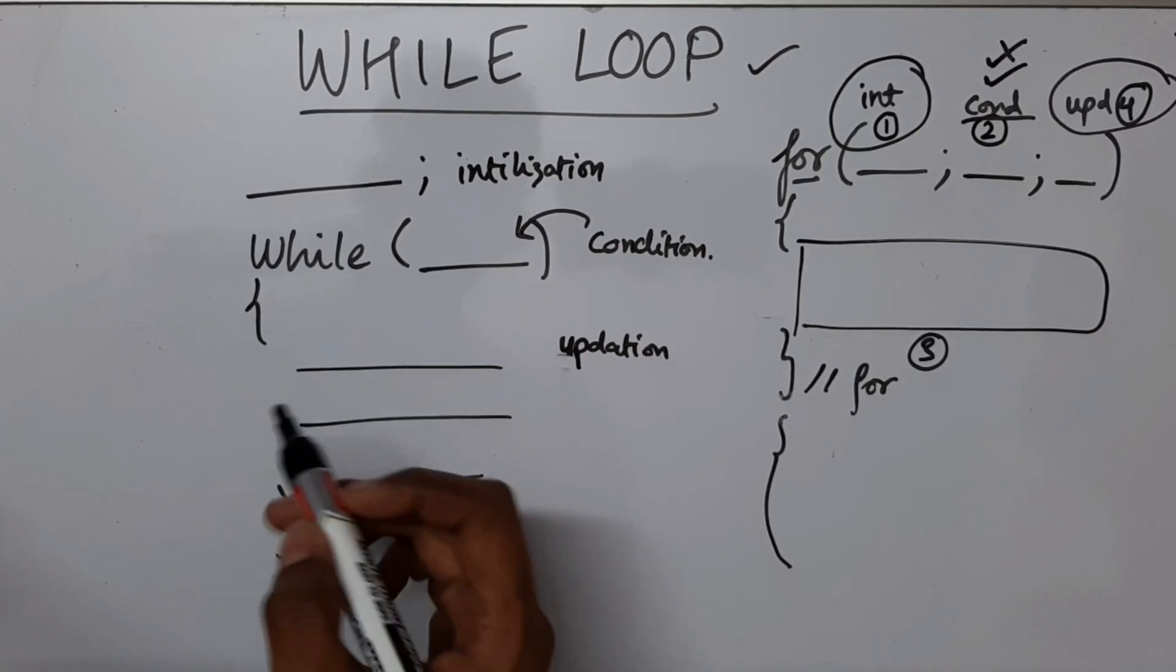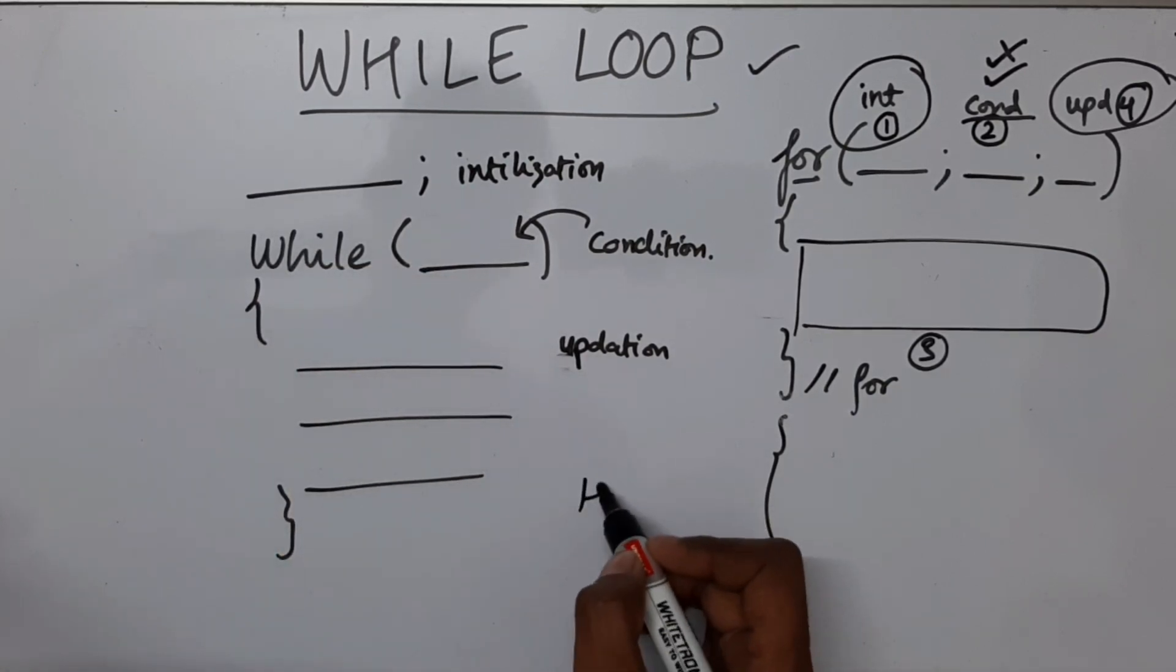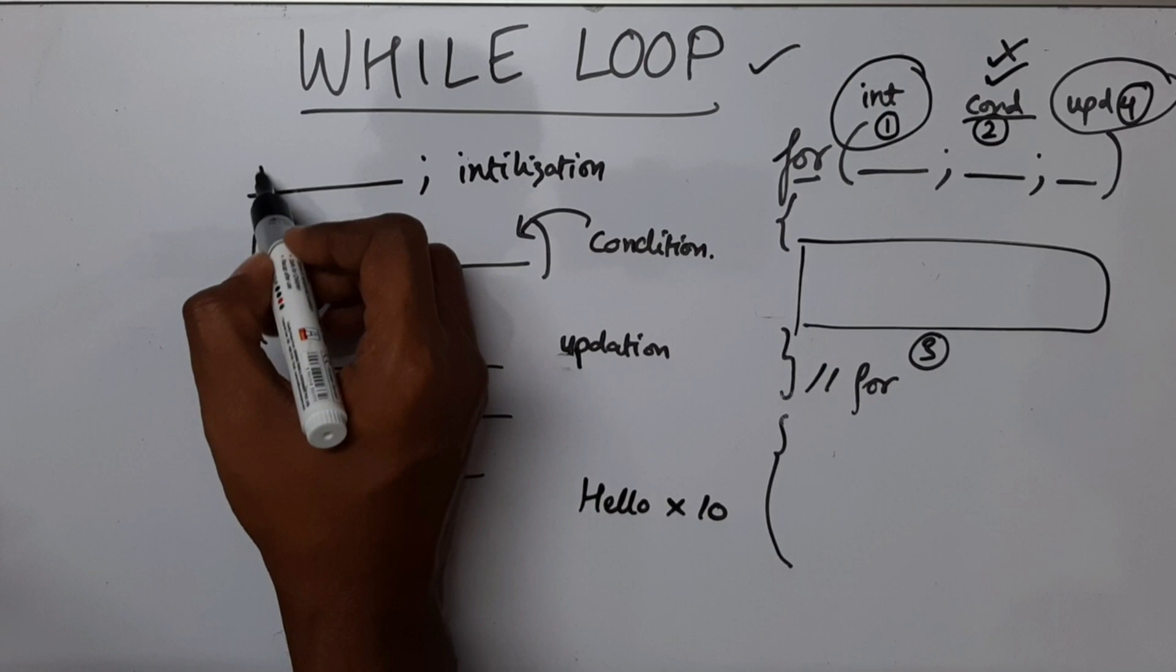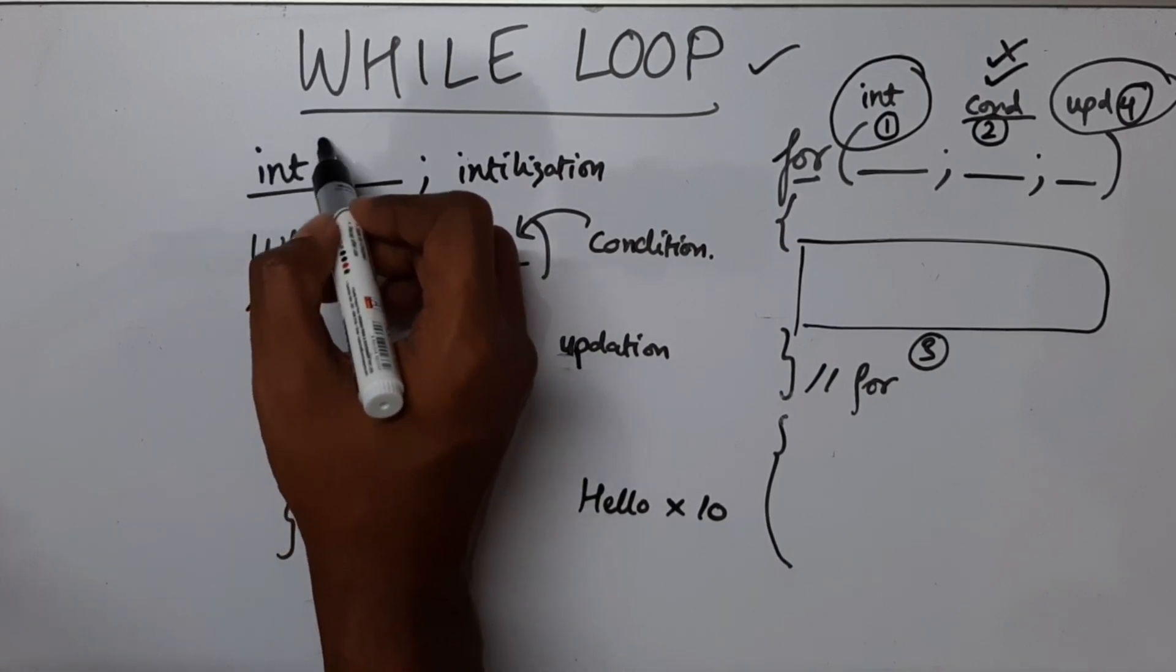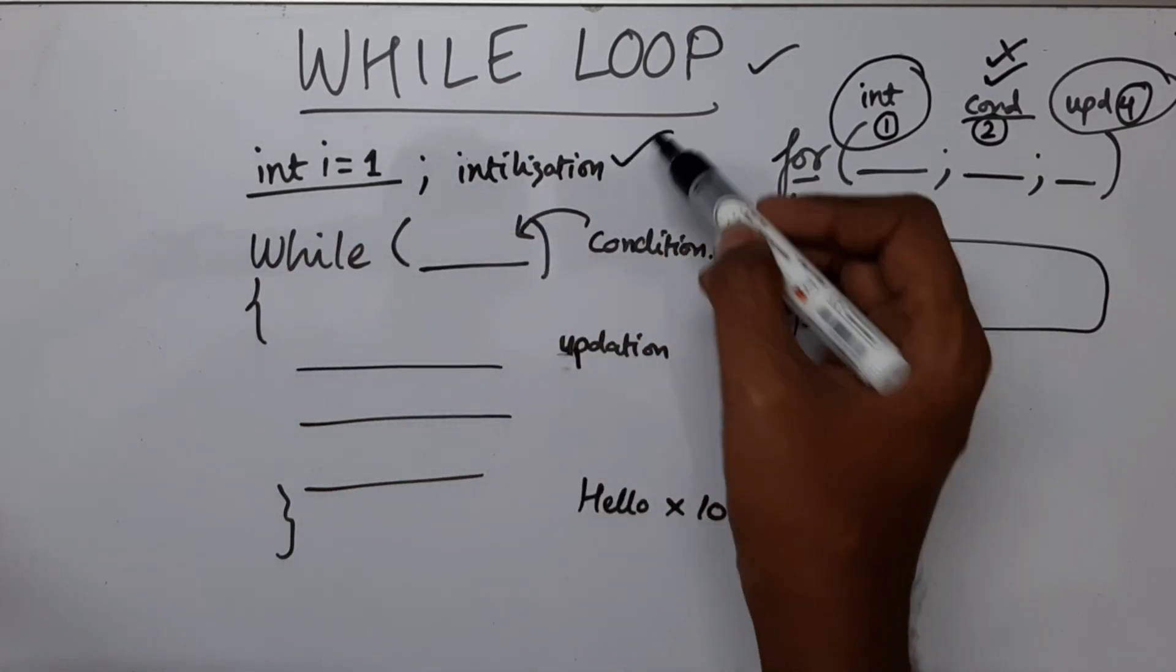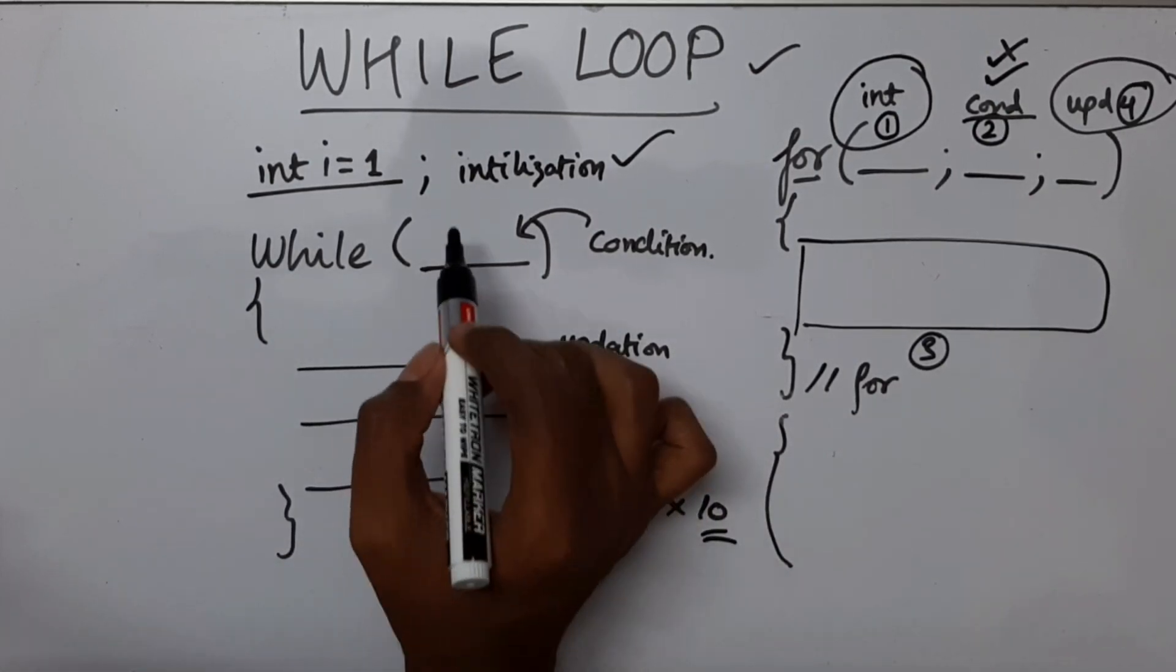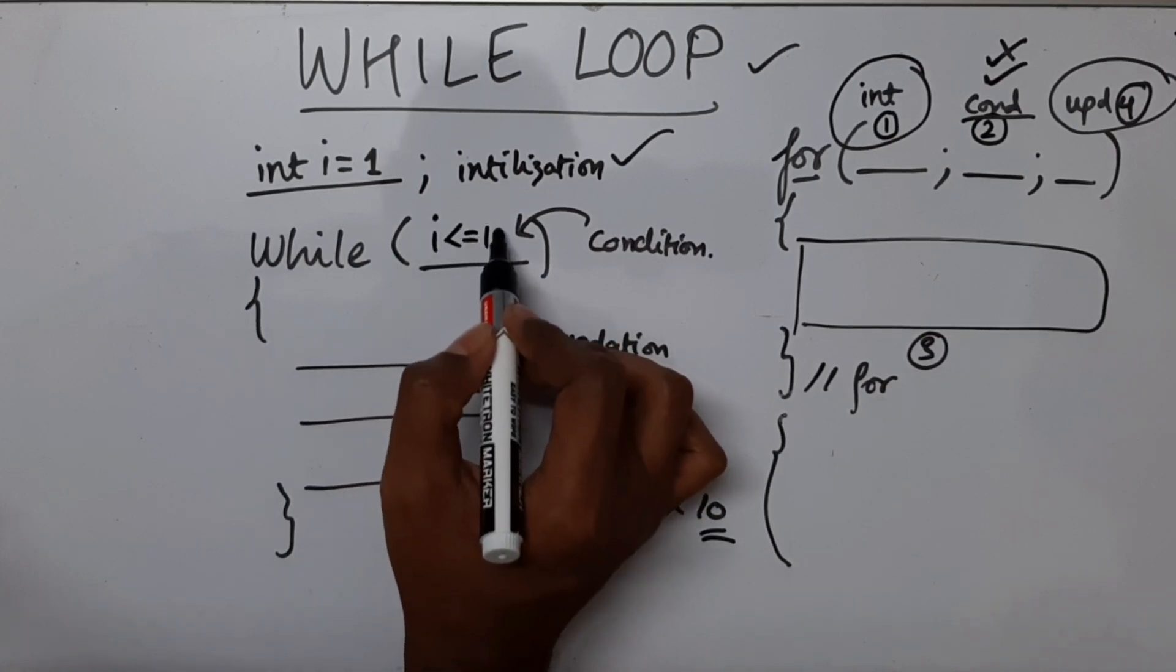So let me give an example. So I will say we have to print hello for 10 times. So what I am going to do is I am going to initialize a variable. I am going to call int i equal to 1. Okay, this initialization is done. What is the condition of the loop? Since we have to print it 10 times,